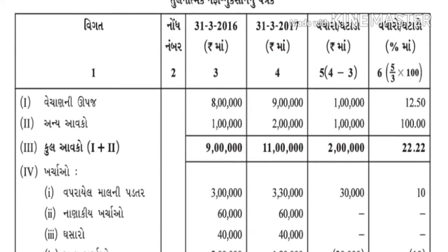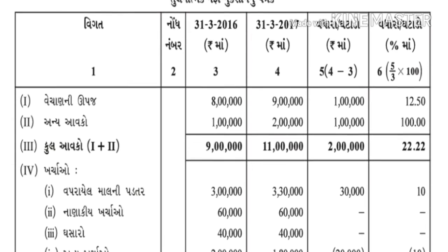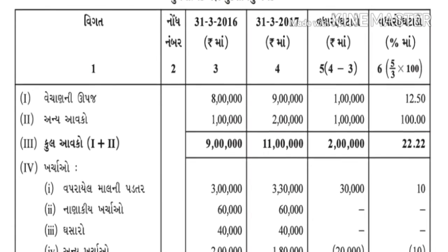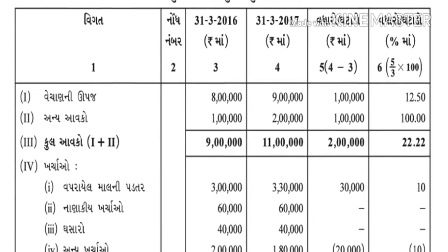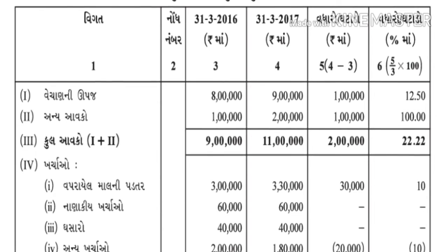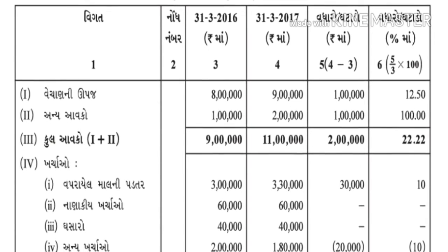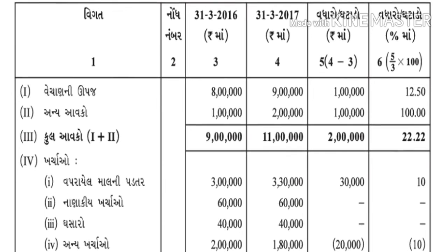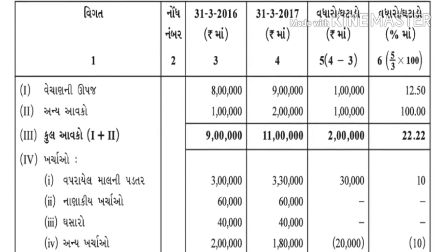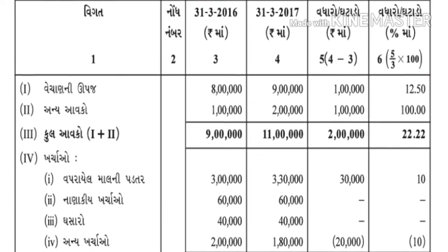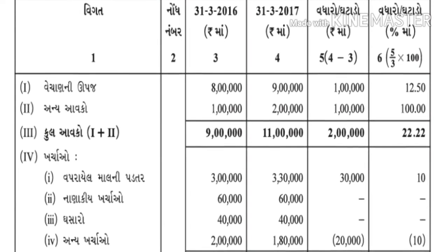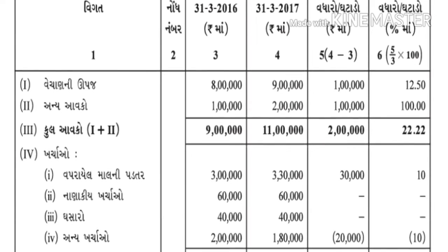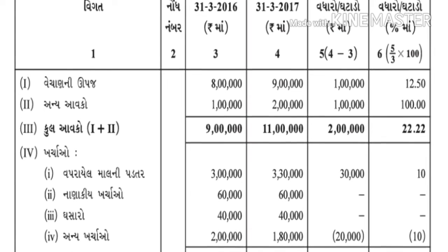ત્યારબાદ અન્ય આવકોની અંદર - 2016માં છે એક લાખ અને 2017માં છે 2 લાખ. આ રીતે ત્યાં મૂકી દેવાના. હવે કુલ આવકનું ખાનું - 2017માં કુલ આવક 10 લાખ અને 2016ની અંદર કુલ આવક 9 લાખ.